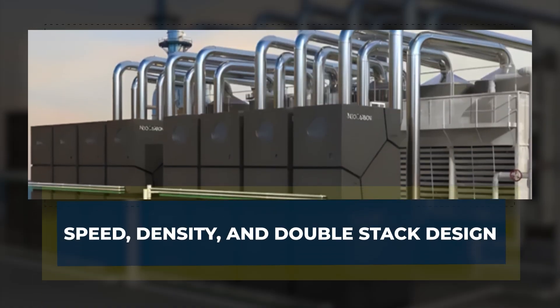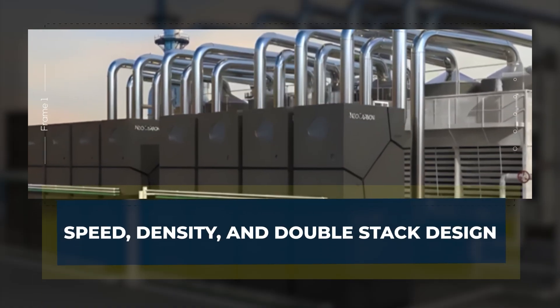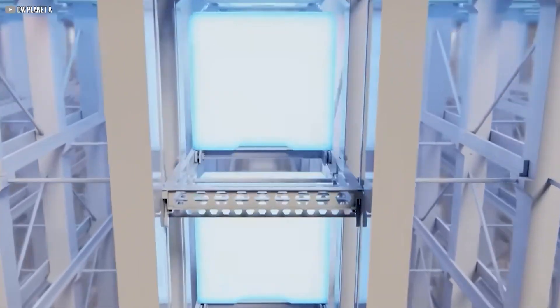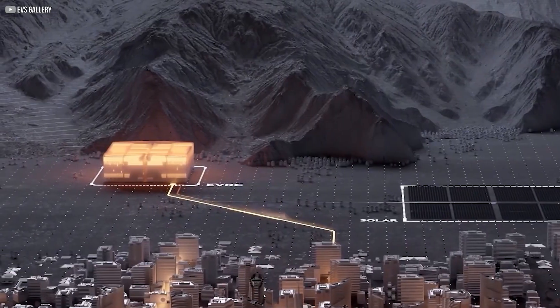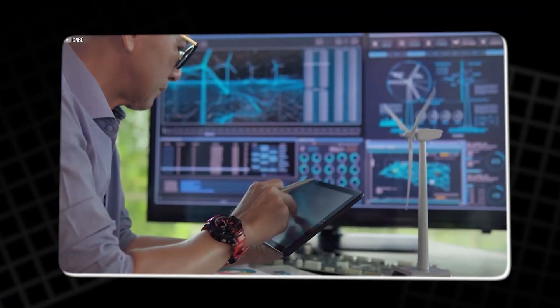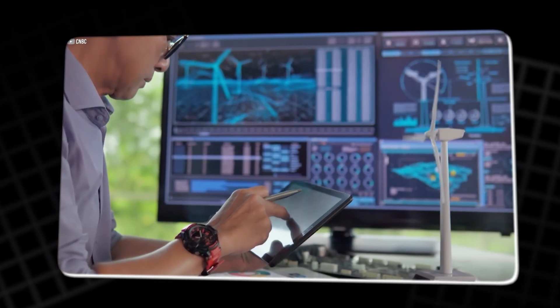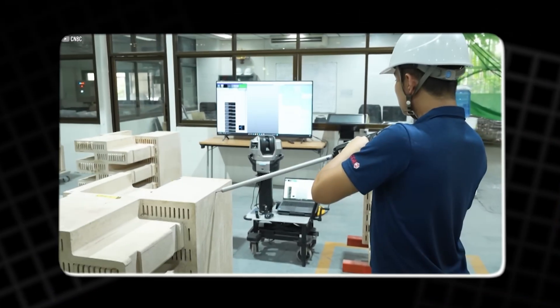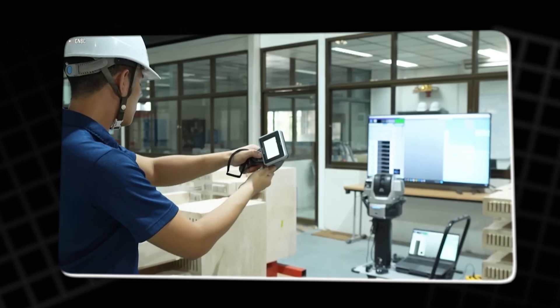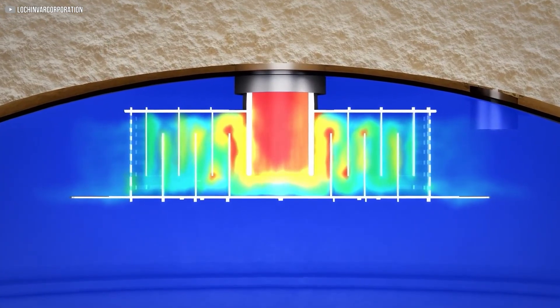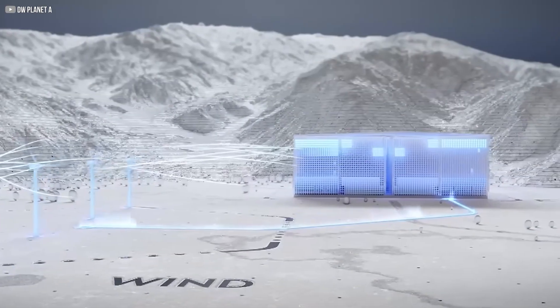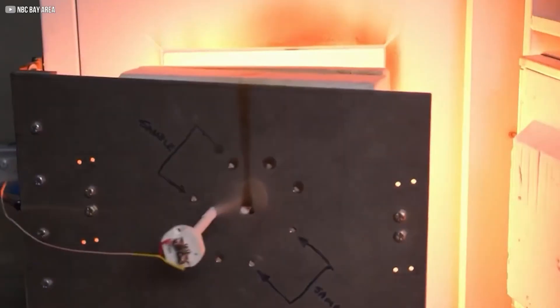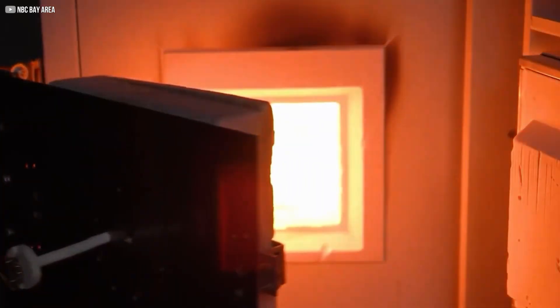Speed, density, and double stack design. One of the overlooked challenges in energy storage is speed. How fast can you store and release power? For grids dealing with sudden surges or drops, that speed matters. Rondo's system doesn't just store heat efficiently, it charges rapidly too. That's because radiative heating, especially at high temperatures, transfers energy much faster than conduction or convection. The hotter the bricks get, the more heat they radiate exponentially.